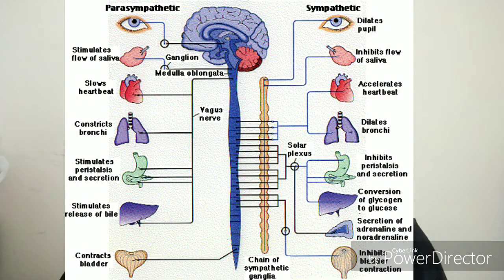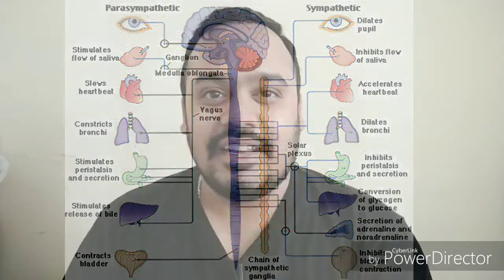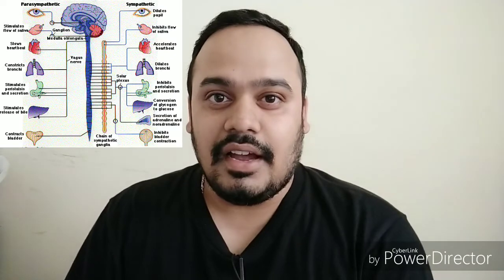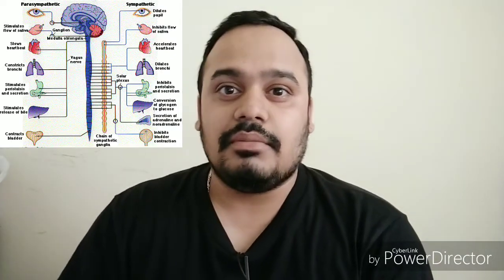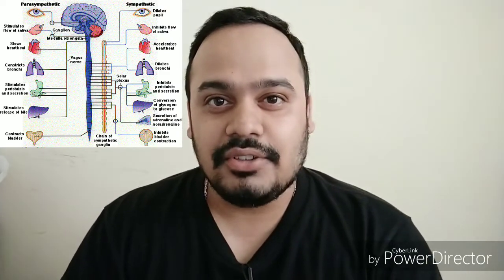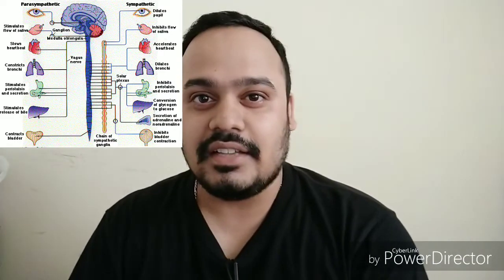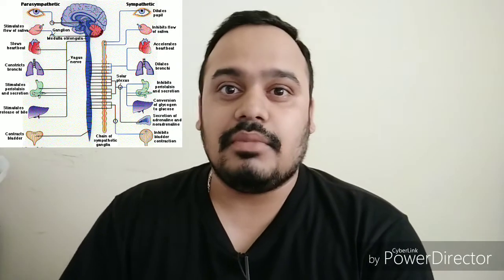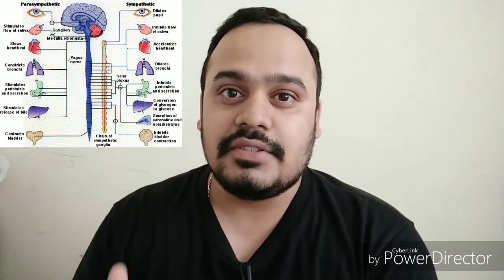The autonomic nervous system controls involuntary responses to regulate physiological functions. The brain and spinal cord of the central nervous system are connected with organs that have smooth muscle, such as the heart, bladder, and other cardiac, exocrine, and endocrine-related organs, by ganglionic neurons. The most notable physiological effects from autonomic activity are pupil constriction and dilation, and salivation.